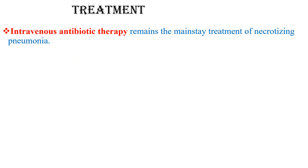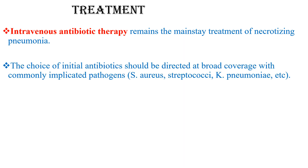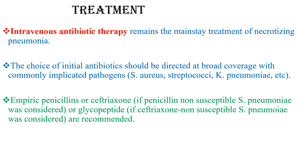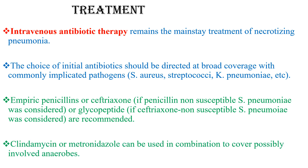Intravenous antibiotic therapy remains the mainstay of therapy for necrotizing pneumonia. The choice of initial antibiotics should be directed at broad coverage of commonly implicated pathogens — Streptococcal pneumonia, Staphylococcus, and Klebsiella. Empiric penicillin or ceftriaxone, and glycopeptides especially vancomycin if ceftriaxone-susceptible Strep pneumonia is considered, should be used. Clindamycin or metronidazole can be used in combination to cover possible involvement of anaerobes, especially if there is lung abscess.